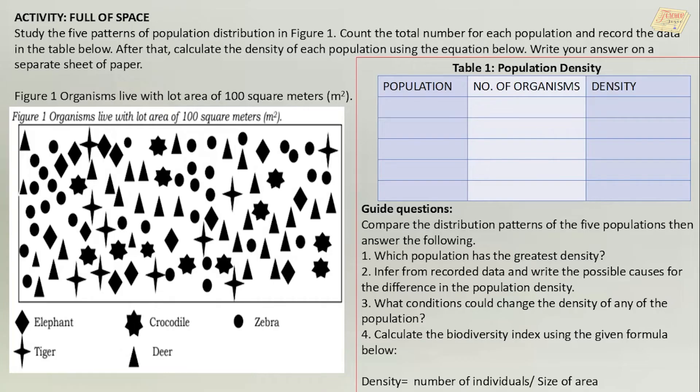Let us now proceed to your activity. Study the five patterns of population distribution in Figure 1. Count the total number for each population and record the data in the table below. After that, calculate the density of each population using the equation below. Write your answer on a separate sheet of paper.